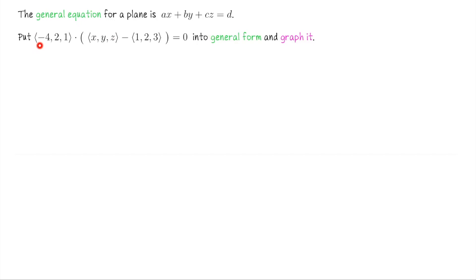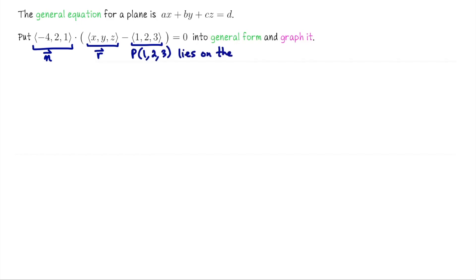Looking at this example, you might recognize it takes the form of the vector equation we just saw. In particular, negative 4, 2, 1 is the orthogonal vector n. The vector x, y, z represents r — the position vector for any point on the plane in component form. And the vector 1, 2, 3 is the position vector for a known point on the plane, so the point (1, 2, 3) lies on the plane. To convert to general form, we first do the vector subtraction, then carry out the dot product: negative 4 times (x minus 1), plus 2 times (y minus 2), plus 1 times (z minus 3) equals 0.